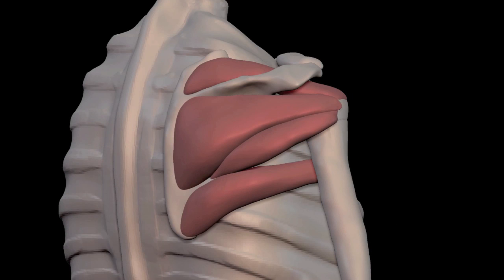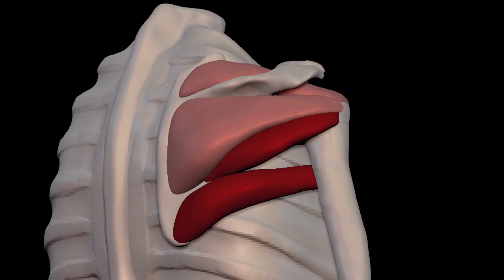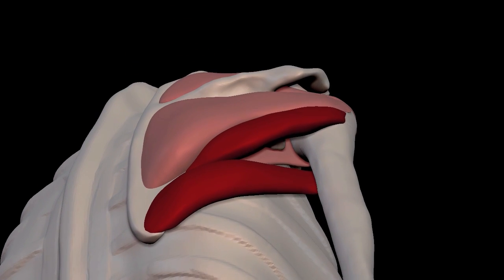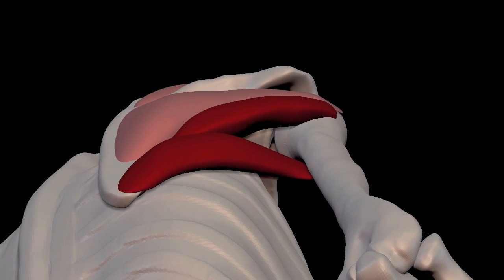So here we can look at the teres muscles in context of the other deep muscles of the arm. On top, remember, we have teres minor. On bottom, we have teres major. Looking at them from the bottom highlights the fact that the teres major goes to the front and the minor goes to the back.